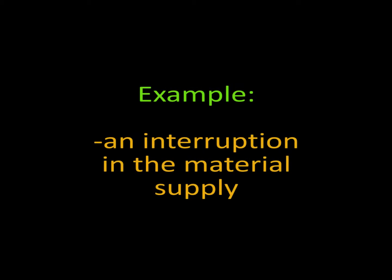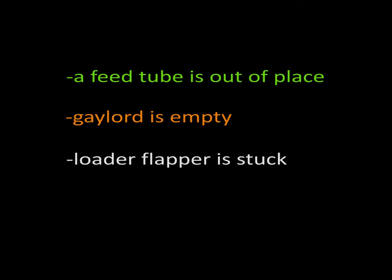As an example, let's look at how a common interruption in the material supply can impact the drying process. A feed tube is out of place, a Gaylord box has become empty, a loader flapper is stuck, and so on.